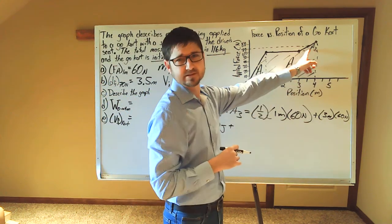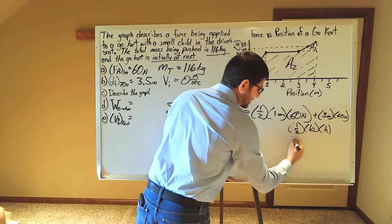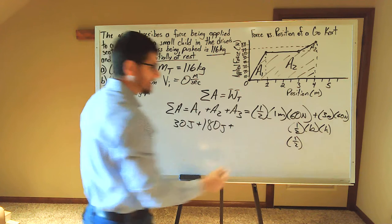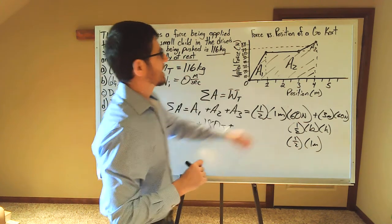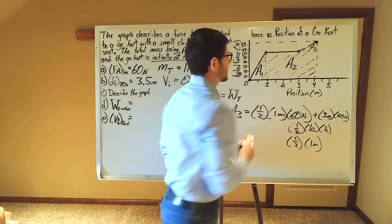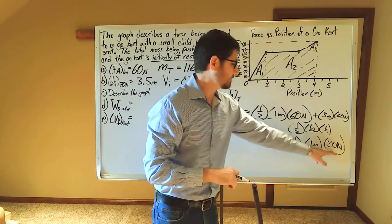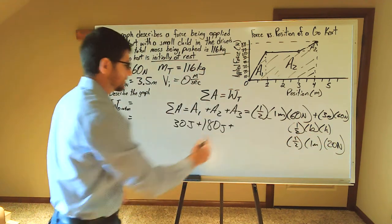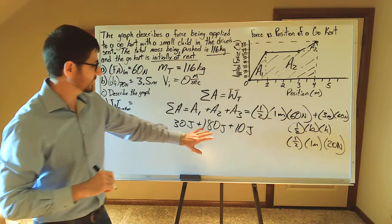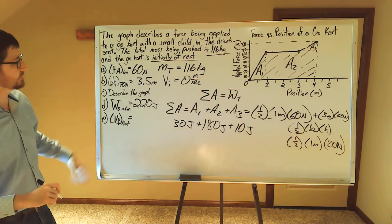So 30 joules plus 180 joules plus 10 joules gives us 220 joules total. The answer to part D is 220 joules.